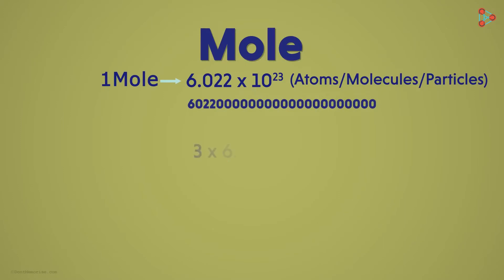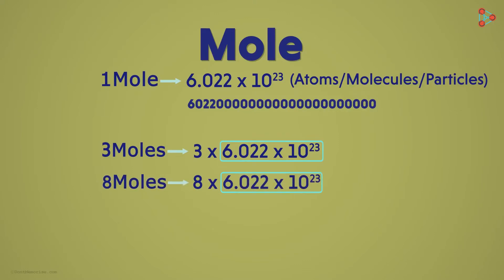Now let's say we take a substance which has 3 times the number of particles here. Then we say that this is 3 moles of this substance. And what if we have a substance which has 8 times the number of particles here? That's correct. It will be 8 moles of that substance.